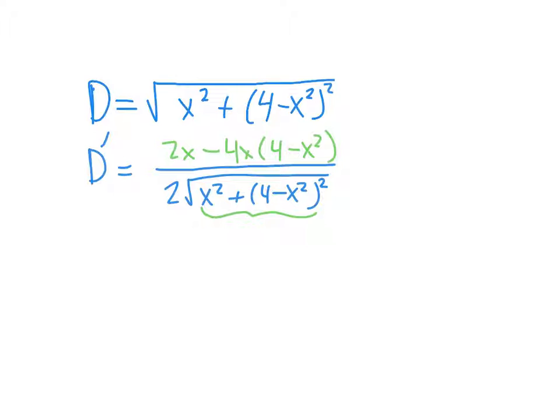So we have this derivative, and I should probably just simplify the numerator a little bit. When I distribute the negative 4x to the 4, I get negative 16, so that makes negative 14x. And when I distribute the negative 4x to the x squared, that's plus 4x³. And my denominator is still 2 square root of x² + (4 - x²)². If you want, you can probably factor out a 2 and cancel that 2 out. We don't really need to.